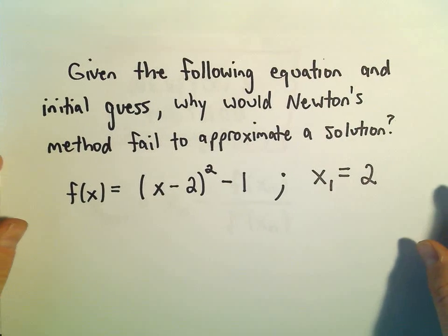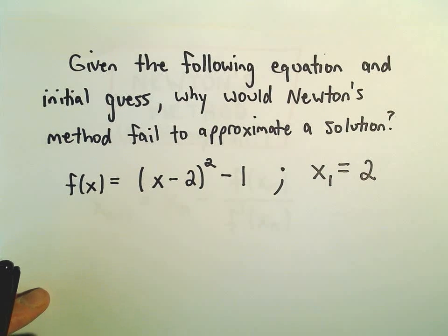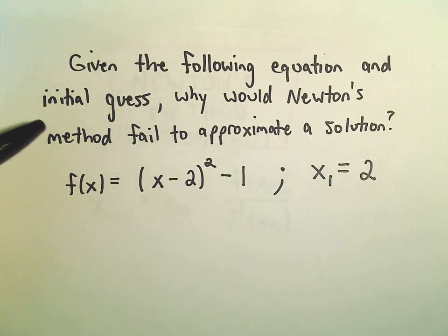Hopefully you've seen the other examples on how to compute things. This is the basic geometric idea. Given the following equation and initial guess, we want to know why Newton's method would be bad.